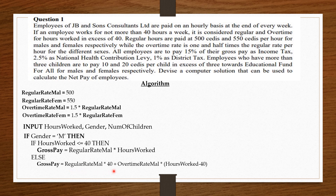Plus, for working overtime, this employee gets 1.5 times the regular rate times the additional hours worked after 40 hours — that is, hours worked minus 40, which is in excess of 40. So the gross pay equals the regular rate times 40, plus 1.5 times the regular rate for males times (hours worked minus 40). This gives the gross pay for the male employee. Then we close with end-if.